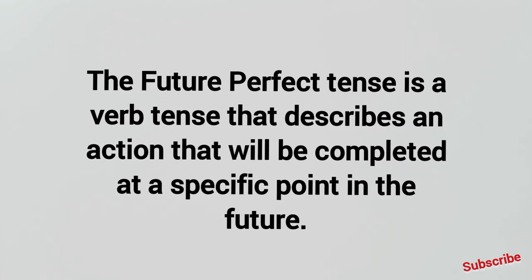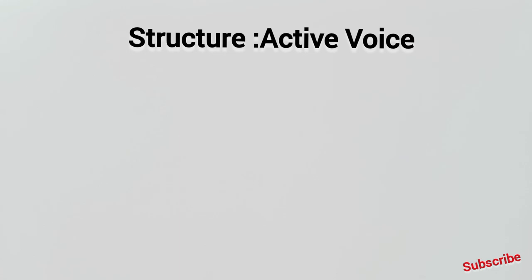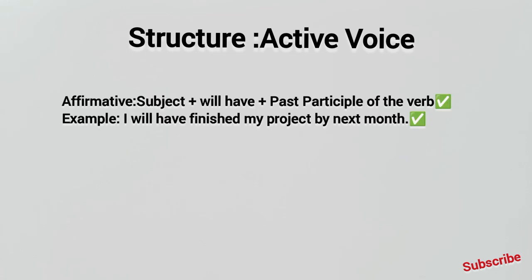Future perfect tense describes an action which will be completed at a particular point. Now we will talk about active voice in the future perfect tense structures. In the affirmative sentence, the structure of future perfect tense is: subject plus 'will have' plus past participle of the verb.